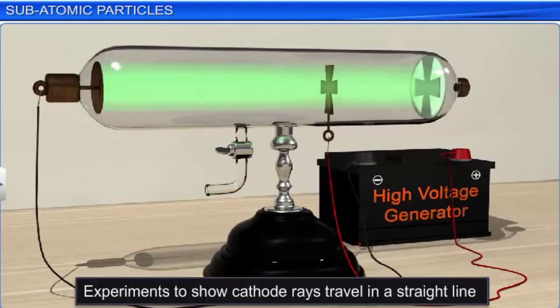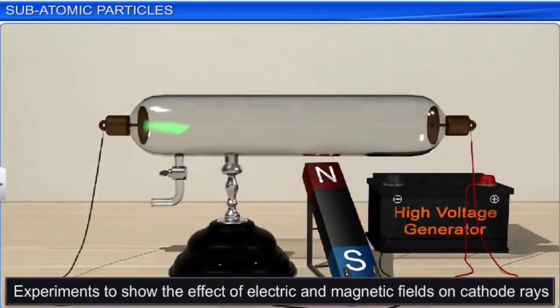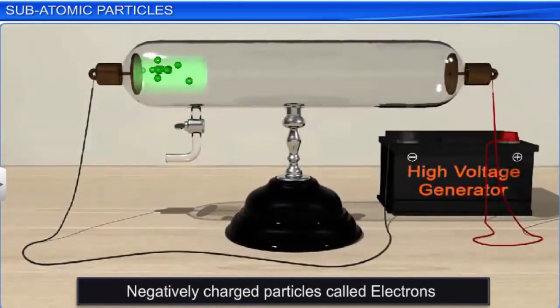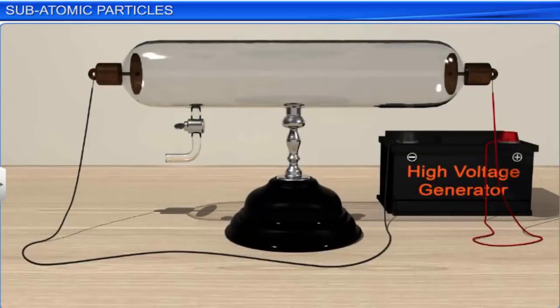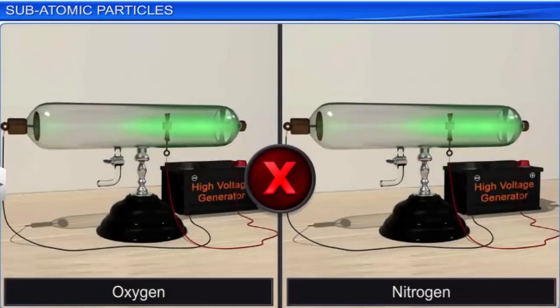However, when he applied an electric field to the setup, the cathode rays deflected towards the positive plate of the electric field. He observed the same result on applying a magnetic field. Therefore, he concluded that cathode rays consisted of negatively charged particles, which he named electrons. Thomson also concluded that the properties of cathode rays do not depend upon the material of electrodes or the nature of the gas present in the cathode ray tube, leading him to conclude that electrons are the basic constituents of all atoms.